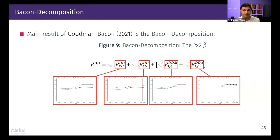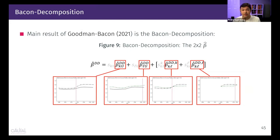Question: do we need to weight beta if we only have heterogeneity across treated units without dynamic treatment effects? If there are no dynamics — just a jump that stays constant — the negative weighting problem goes away, as shown in the Goodman-Bacon paper. But the weights still depend on variances, so you have to decide if you're comfortable with variance-based weights. If you're not, there are alternatives.